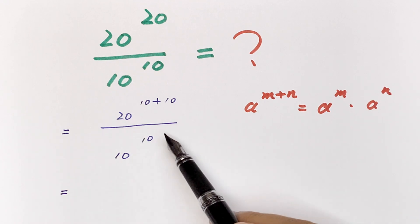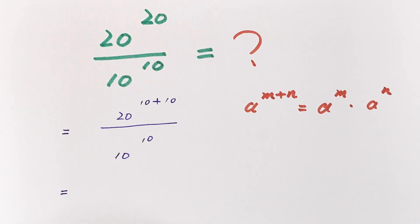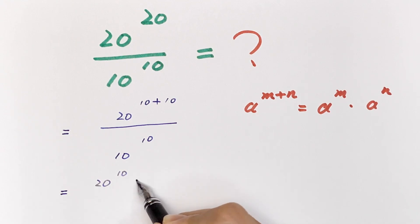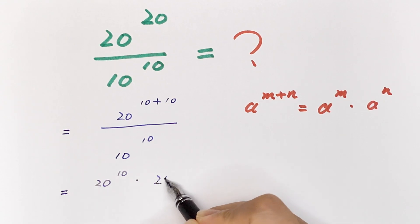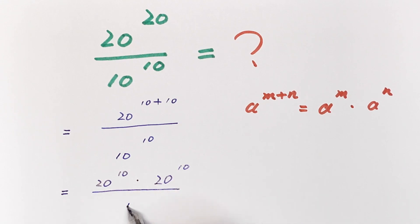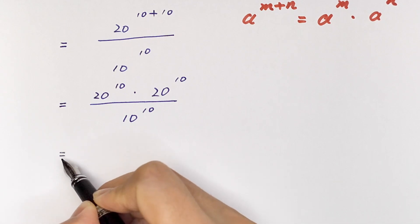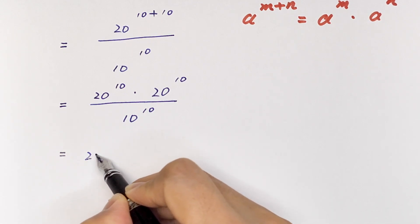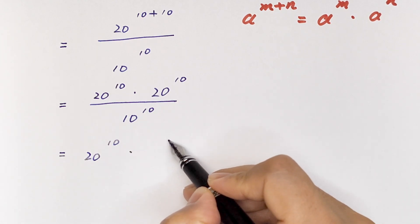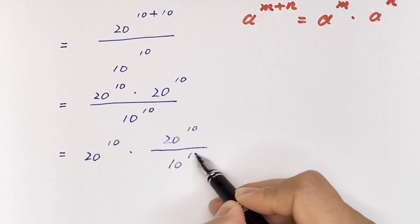Applying that multiplication rule, it will be equal to 20 to the power of 10 times 20 to the power of 10, over 10 to the power of 10.